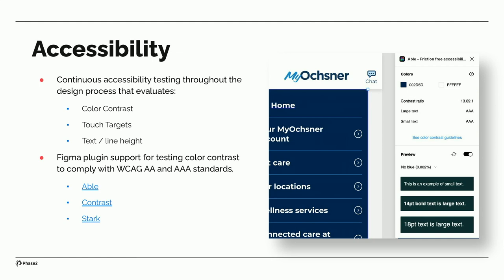Accessibility is a really important aspect to everything we do at Phase 2, and Figma helps us there with some accessibility plugins. The things I care about most are proper color contrast, touch targets — the 48 by 48 pixels on a mobile device is really important — and text and line height, making sure text is legible and readable on all devices. There are several plugins that allow us to test for WCAG AA and AAA. Things like Able, Contrast, and Stark are three plugins we really recommend. You can toggle on different types of color blindness to see how someone with color blindness would digest the design.